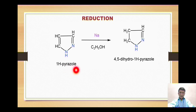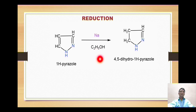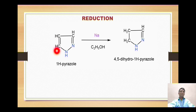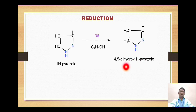The next reaction is reduction. When pyrazole is treated with sodium in the presence of ethanol, the ethanol provides hydrogen ions that are attached specifically to the double bond between the carbons only. This very specific reaction reduces only the carbon-carbon double bond, giving the formation of 4,5-dihydro-1H-pyrazole.